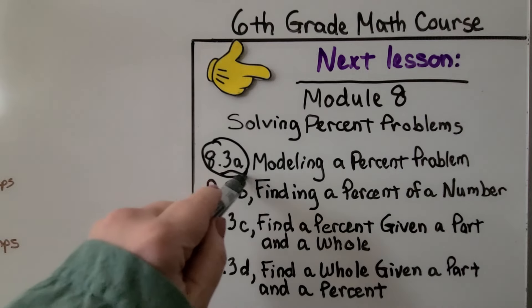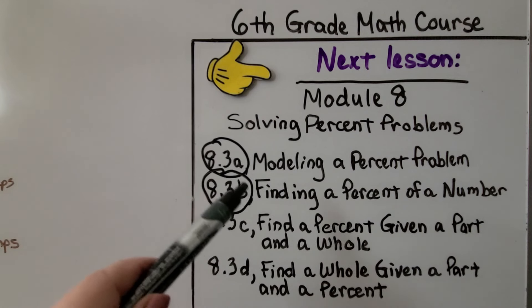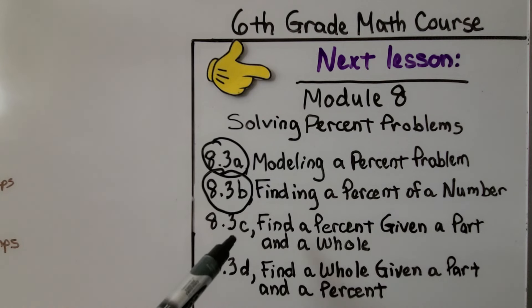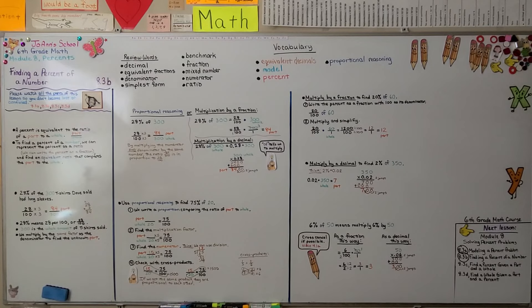So we finished this lesson, and we learned how to find a missing part. In 8.3c, we're going to find a percent when we know the part and the whole. I know this can be confusing for some of you, but hopefully my colors will help clear up any confusion. I'll see you next time.